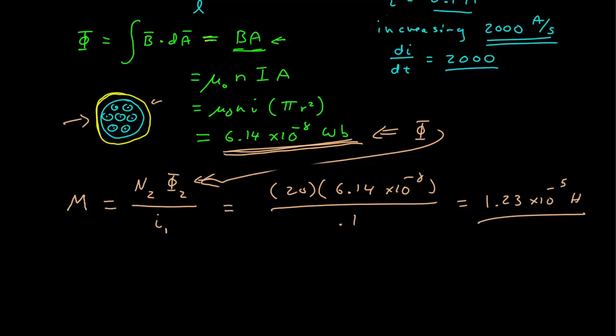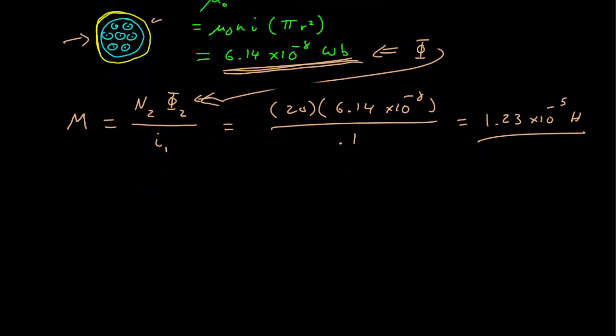The mutual inductance is useful to have because then we can calculate the induced EMF in the second coil, which is just given by the mutual inductance times the derivative of the current, the rate at which the current is changing.